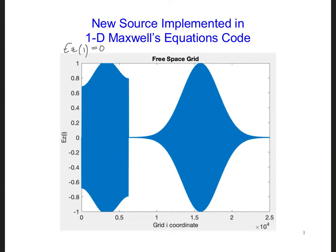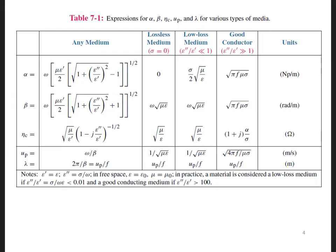What does this mean physically to have an electric field always equal to 0? Let's look back at table 7-1 again. In this table, we can see basic parameters for electromagnetic waves propagating in different materials.